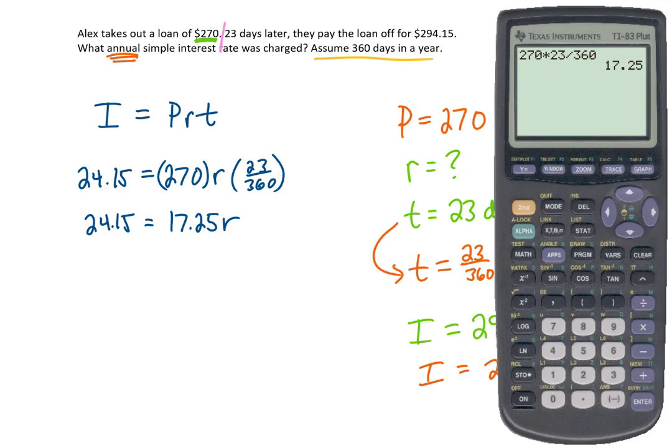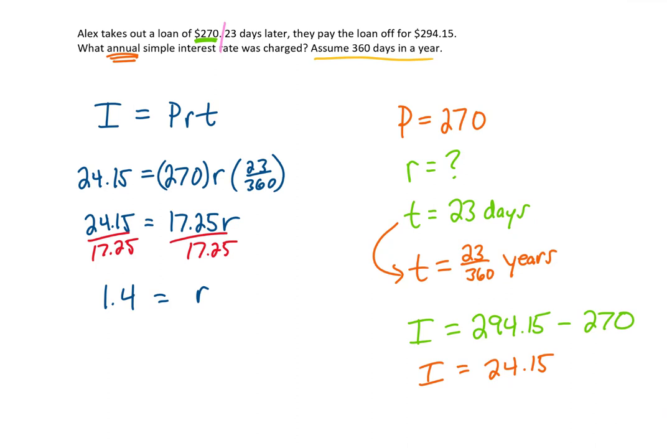In order to solve this equation for r, we need to divide by 17.25. That's going to give us r by itself on the right side. On the left, we just need to divide 24.15 by 17.25. That gives us 1.4 as an answer. But don't be fooled. Recall that every r that we find in this simple interest formula is actually a decimal, not a percent. So we need to convert that into a percent by moving the decimal two places to the right. That gives us an annual interest rate of 140% per year.